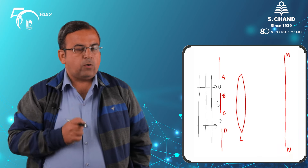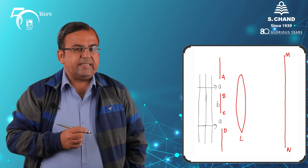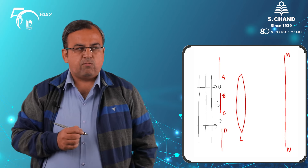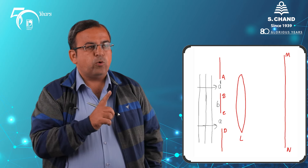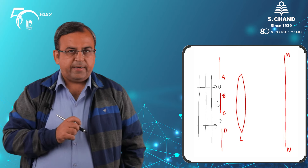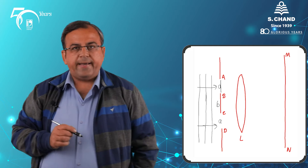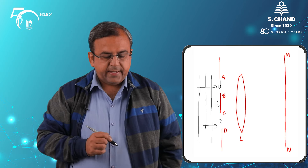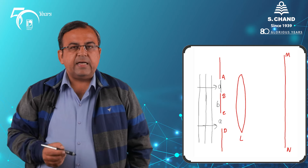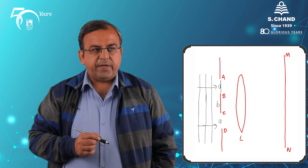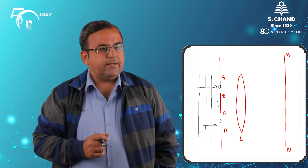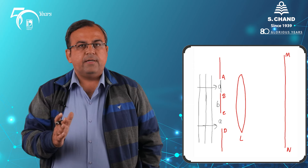What we were covering when we started Fraunhofer diffraction at a double slit is that we took two slits — AB and CD — which are having a width small a, and BC which is an opaque portion having a width small b. We considered a complete XY plane, and we see a lens L and MN as a screen where we are observing the pattern.